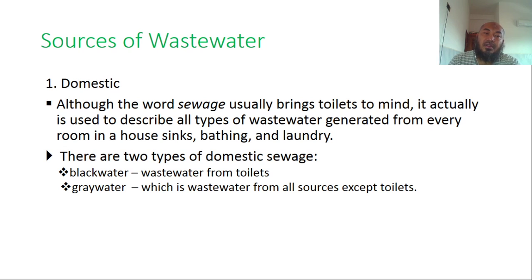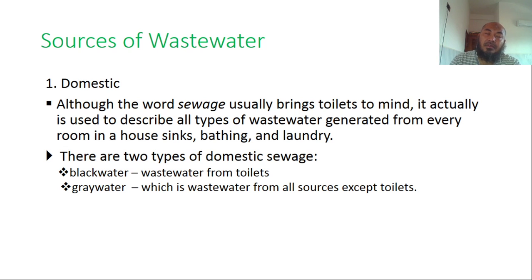The word 'sewage' usually brings toilets to mind, but it is actually used to describe all types of wastewater generated from every room in a house — the sink, bathtub, and laundry. There are two types of domestic sewage: black water and gray water. Black water is wastewater from the toilet, and gray water is wastewater from all sources except the toilet.